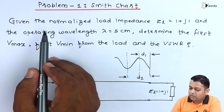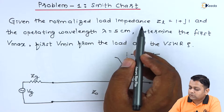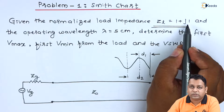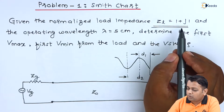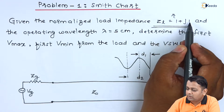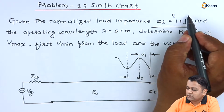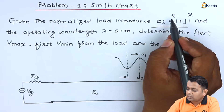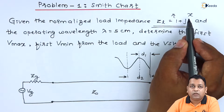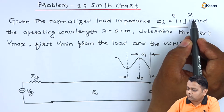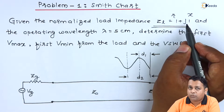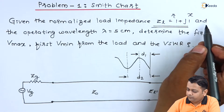From the problem statement, the normalized load impedance value is given: Z_L equals 1 plus J1, which we can plot onto the Smith chart. Here, 1 is the real part and J1 is the imaginary part — R equals 1, the pure resistance, and X equals 1, the pure reactance. Since the imaginary portion is positive, we go onto the upper half of the Smith chart.